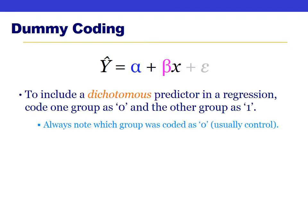For the first two examples today, we'll include a dichotomous X variable — one with exactly two levels. Dummy coding simply means ensuring this variable is coded as either zero or one. Each participant will have a zero if they're in one group or a one if they're in the other group.